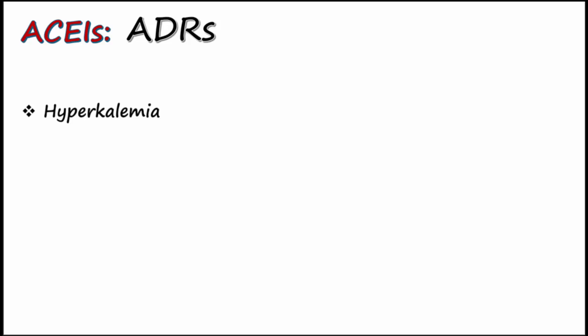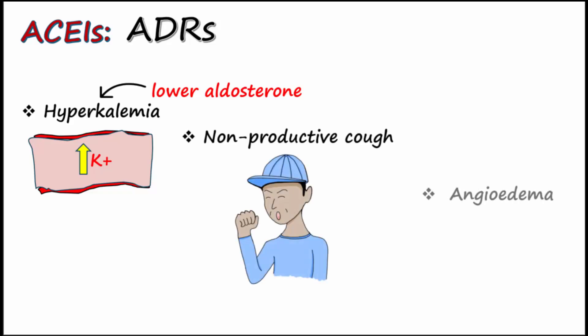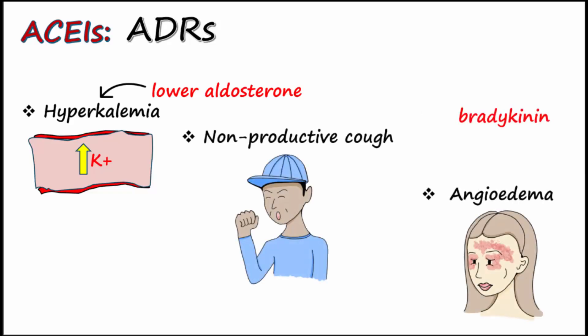Adverse drug reactions, or ADRs, for ACE inhibitors include hyperkalemia due to their action to lower aldosterone. Recall that aldosterone causes potassium secretion, which lowers potassium in the blood. With ACE inhibitor treatment, aldosterone levels are low, so it causes hyperkalemia, which is high potassium in the blood. The nonproductive cough and angioedema are due to actions of bradykinin. Remember that the enzyme ACE breaks down bradykinin, so if you give an ACE inhibitor, bradykinin levels will rise.